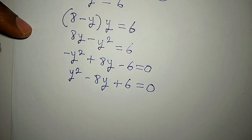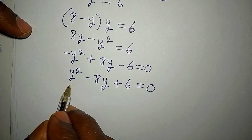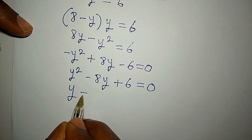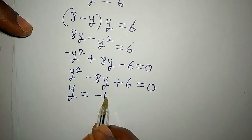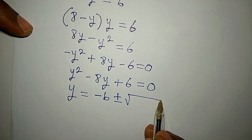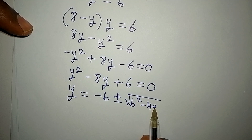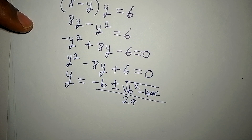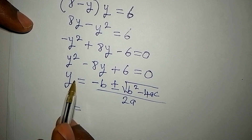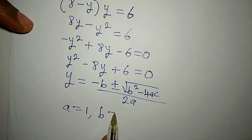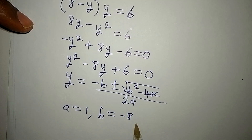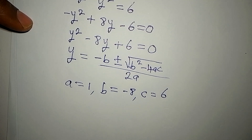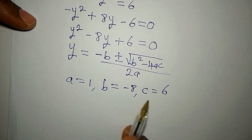We now have a quadratic equation. Rather than factorizing, we'll use the quadratic formula. Since we're solving for y, we write: y equals minus b plus or minus square root of b squared minus 4ac, all over 2a. Here, a is the coefficient of y squared, which is one; b is the coefficient of y, which is minus eight; and c is the constant, which is six.